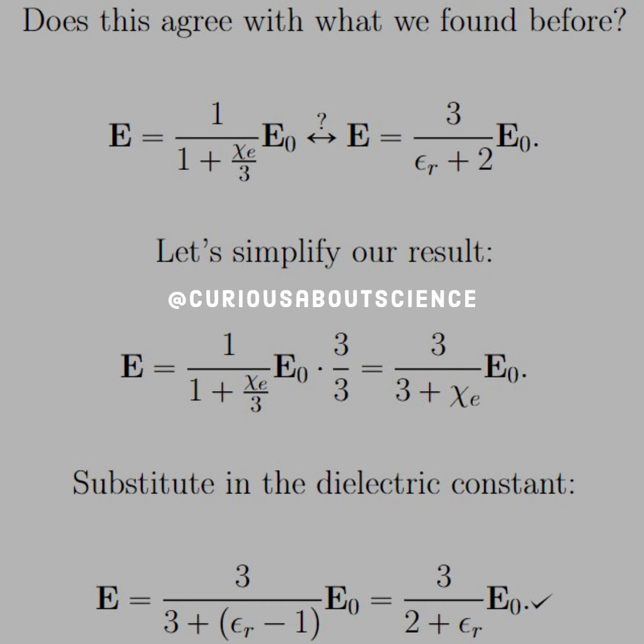But does this agree with what we found in the text? So in the text, we had E equals 3 over the dielectric constant plus 2 times E0.